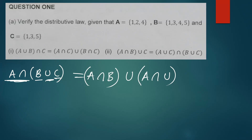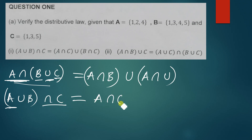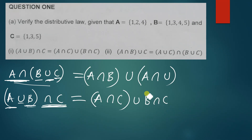Now in this case we have been asked to verify the distributive law. Let me also do it the other way around. Sometimes you might be given A union B, then intersection C. You distribute it the same way: you get A intersection C in brackets, union B intersection C in brackets. This is how you distribute.